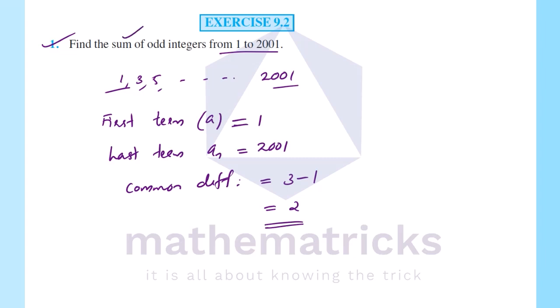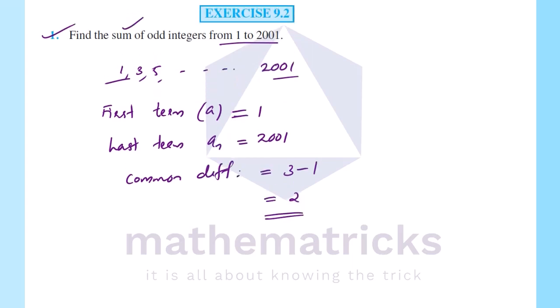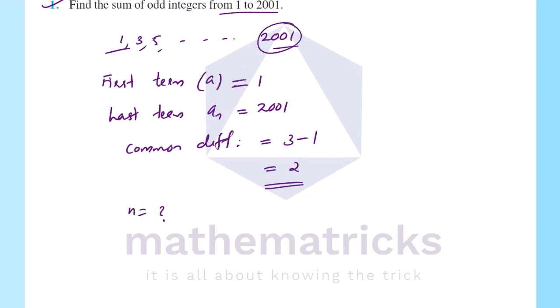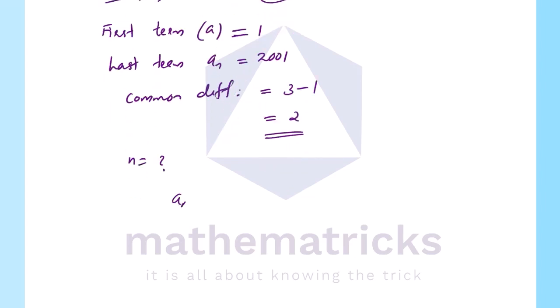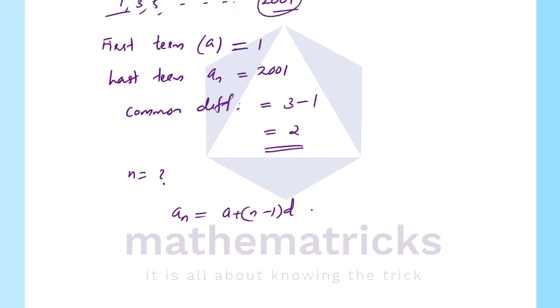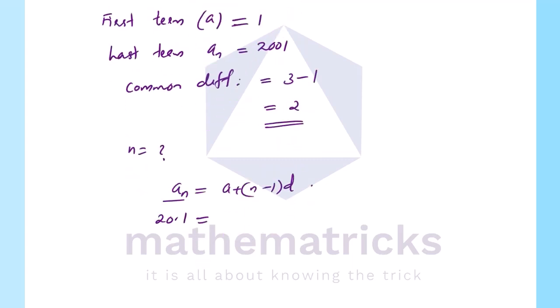We have a sum, and we will add: 1, 3, 5, etc., up to 2001. We will find this sum. If we add from 1 onwards, the next term equals a plus n. The first term is a, and the last term is a_n.